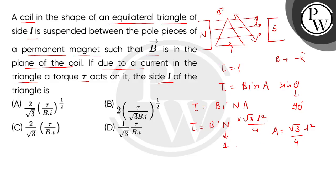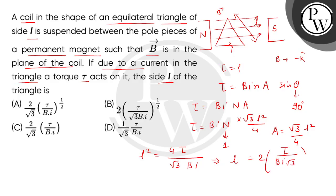Now we have put N equal to 1 here. So what will we get for L squared? That will be 4 times torque divided by square root of 3 times B times I. So we will get L equal to 2 times the square root of torque divided by B, I, square root of 3, to the power half — meaning the whole square root. So we will get the correct answer as option number B. Thank you.